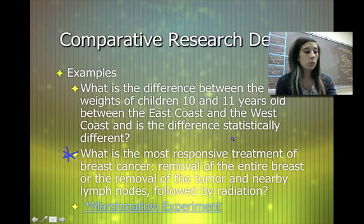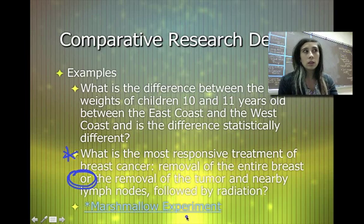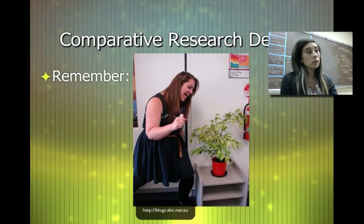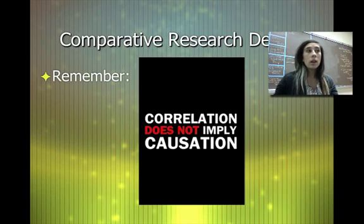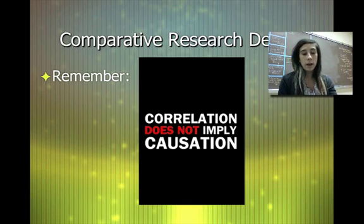An example of a comparative research problem: what is the most responsive treatment of breast cancer — removal of the entire breast, or the removal of the tumor and the lymph nodes followed by radiation? If you look for the word 'or,' it's a good hint that it's comparative research. Remember, just because something correlates, it doesn't imply causation. If I sing to a plant and it grows, that doesn't necessarily mean singing causes the plant to grow — there are lots of other factors.